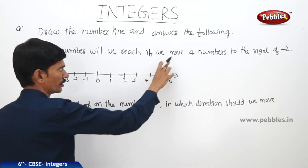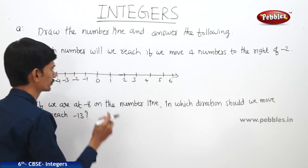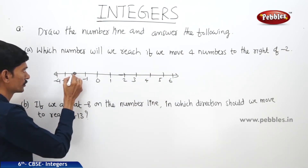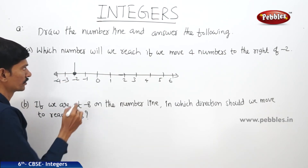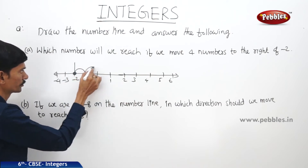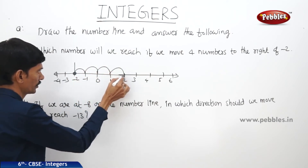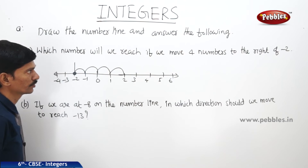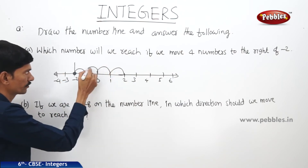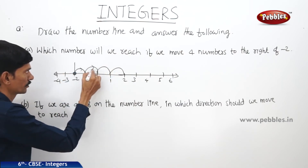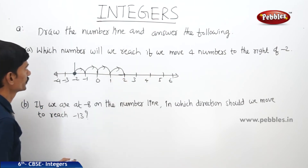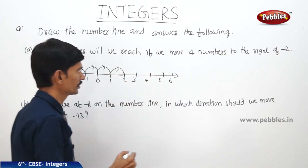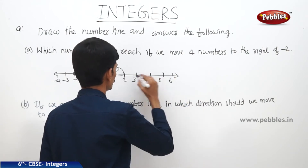If we move 4 numbers to the right of minus 2, first let us represent minus 2. From minus 2, if we move 4 numbers — 1, 2, 3, and 4 — we are moving 4 numbers to the right of minus 2, then we reach 2. So which number will we reach means we will reach 2.